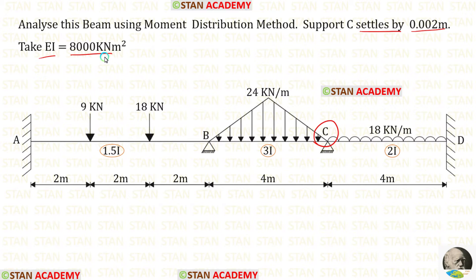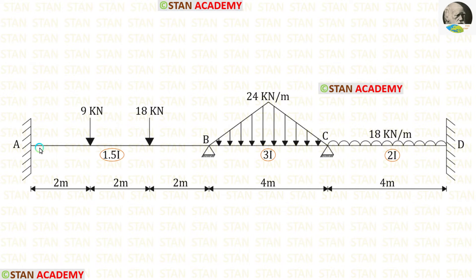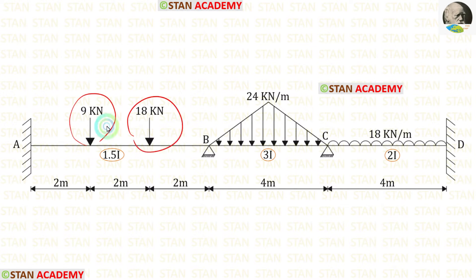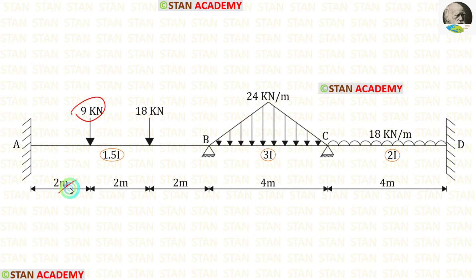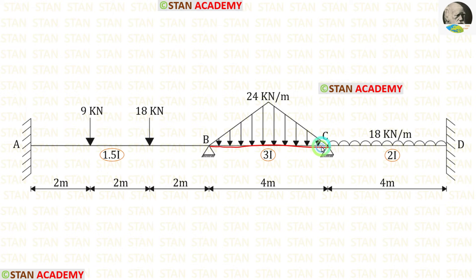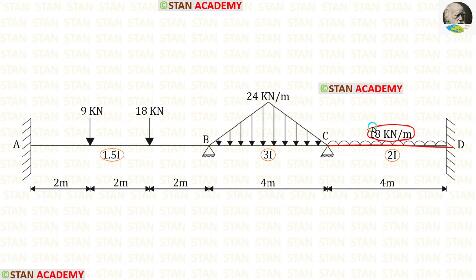Before starting the analysis let us see the beam. In this beam there are three spans: span AB, span BC, and span CD. In span AB we have two point loads — 9 kN acting at 2 meters from point A, and 18 kN acting at 4 meters from point A. In span BC we have a uniformly varying load, maximum at the center of 24 kN per meter. In span CD we have a uniformly distributed load of 18 kN per meter acting for the full span.